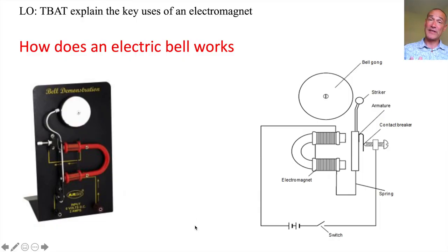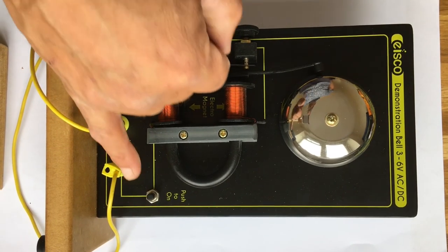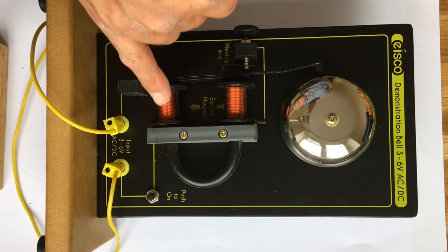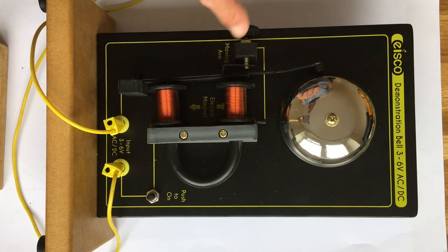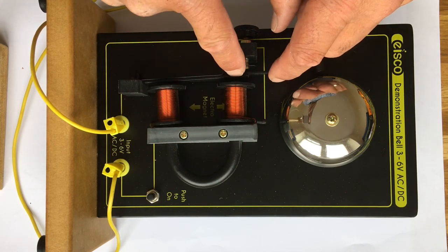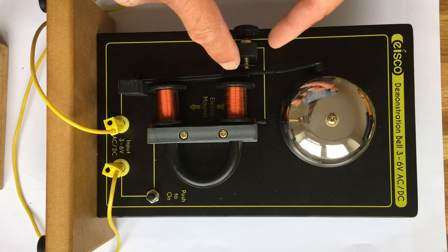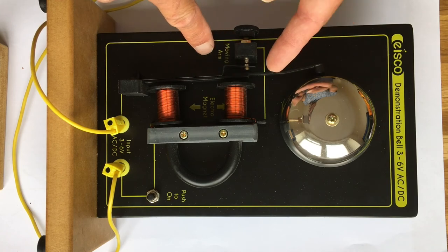Have a quick look at this video I did of this demonstration kit which we have at school. So when I close the switch, current's going to flow around here, it's going to flow through those electromagnets and it's going to attract this armature here, and so that's an iron armature and that will hit the bell and ring the bell.